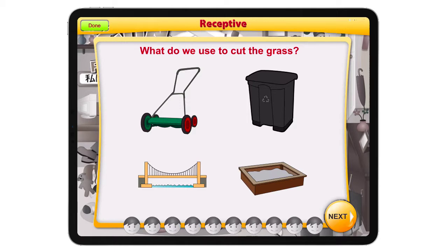The question is: what do we use to cut the grass? We have previously selected four images per screen. We are able to have three or just two depending on the level that the child is currently functioning. If children are having difficulty selecting the correct answer with four items, you can always change it to just two items per screen and slowly add more items.